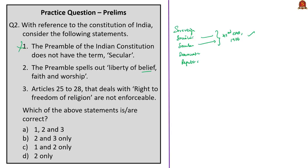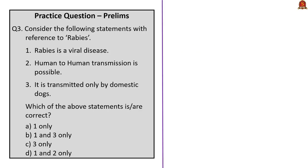The third question on rabies: Statement 1 — rabies is a viral zoonotic disease transmitting from animals to humans — is correct. Statement 2 — human-to-human transmission is possible through transplantation of cornea and vascular tissues — is also correct. Statement 3 implies rabies is transmitted only by certain animals, which is incorrect since it can also be transmitted by bats, mongoose and other mammals. The correct answer is option D — Statements 1 and 2 only.